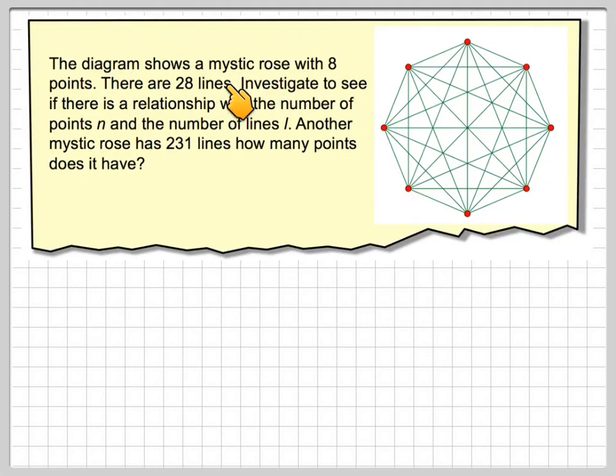The diagram shows a mystic rose with 8 points. There are 28 lines. So what we've got here is 8 points and the number of lines, green lines here, is 28.